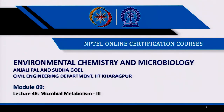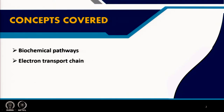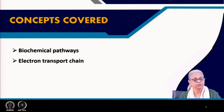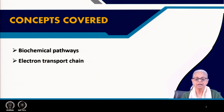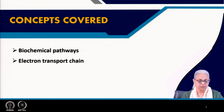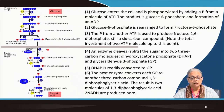Welcome everyone to lecture number 46, which is the third part of microbial metabolism in module 9. We are going to look at the electron transport chain and how the three different biochemical pathways — respiration and fermentation — work, and within respiration, aerobic and anaerobic respiration, and how they happen within the prokaryotic cell.